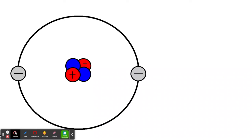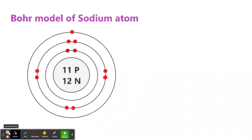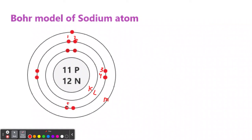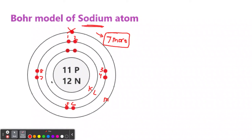The elements want to complete their shell. Let's go back to sodium. In the first ring - K - it's complete. The L has its eight electrons. But on the third ring M, it only has one. So it wants seven more. But it's easier to lose one than gain seven. So sodium wants to lose one electron so it can be complete.